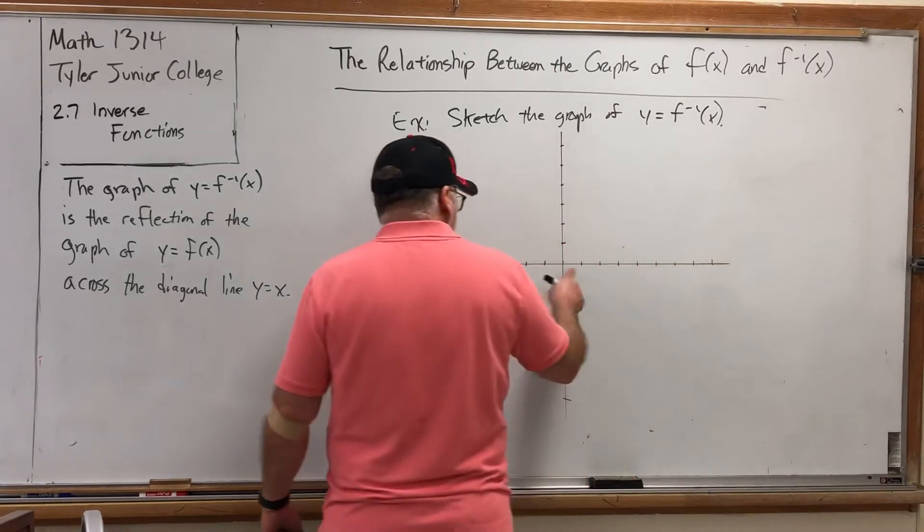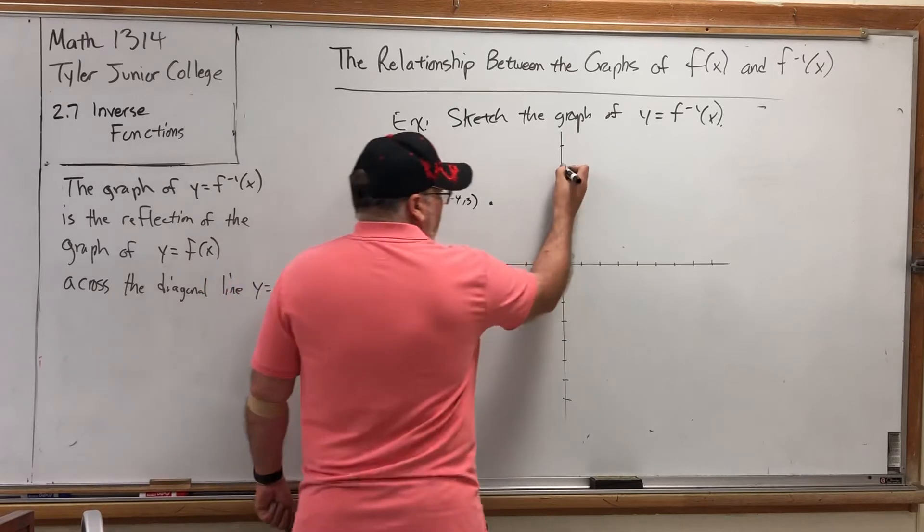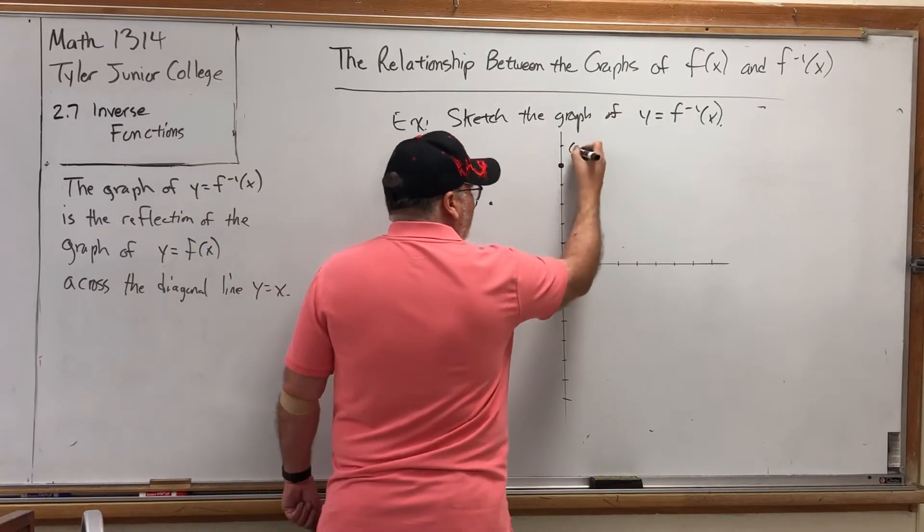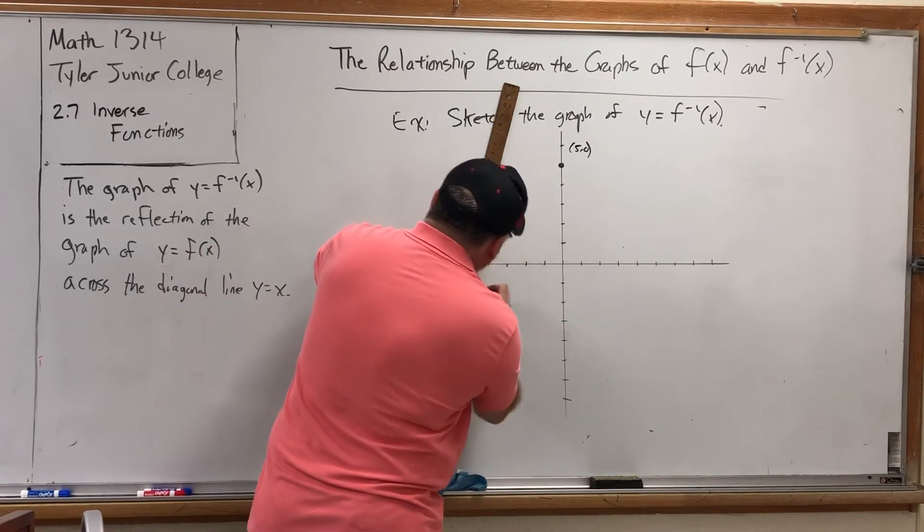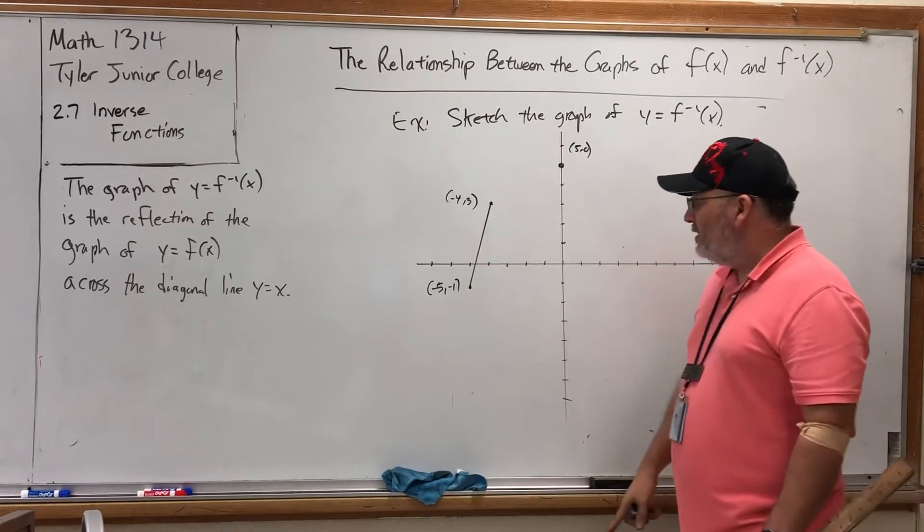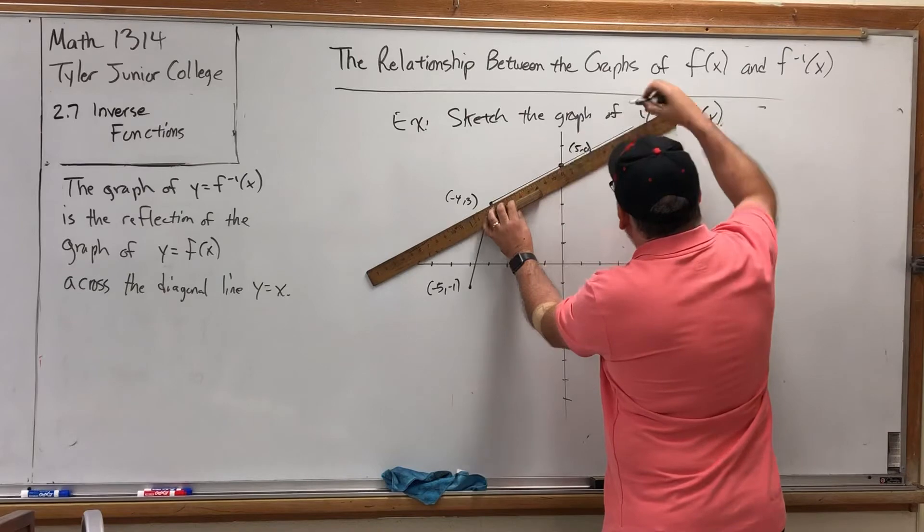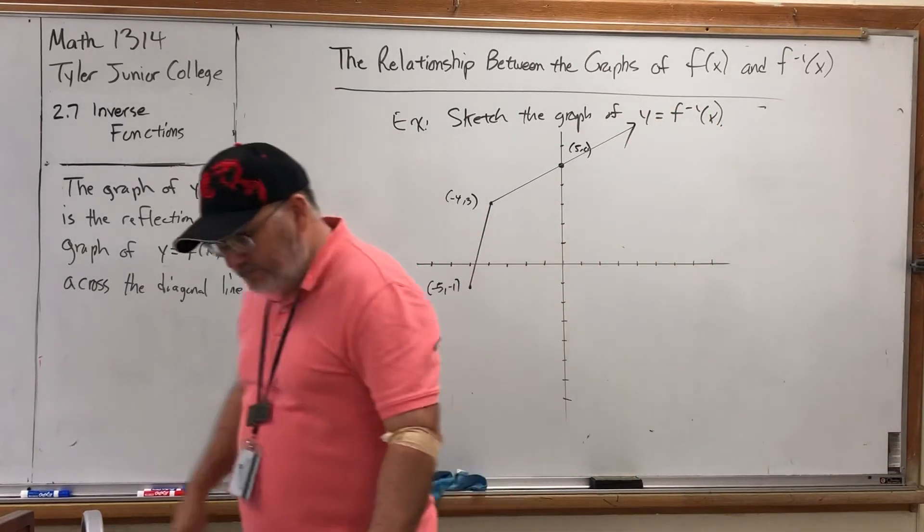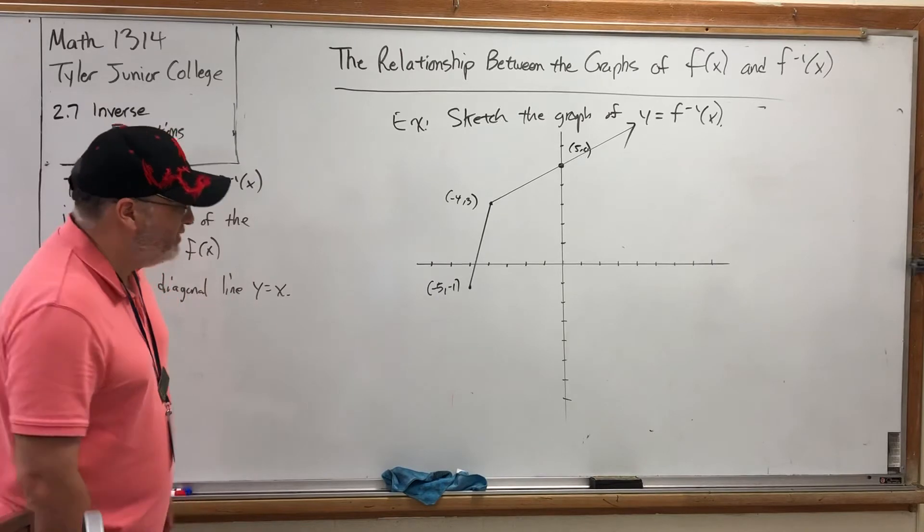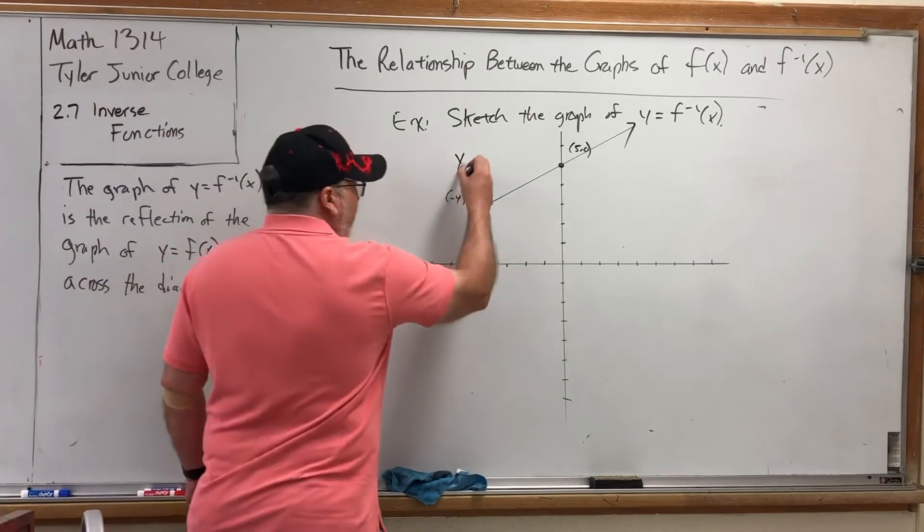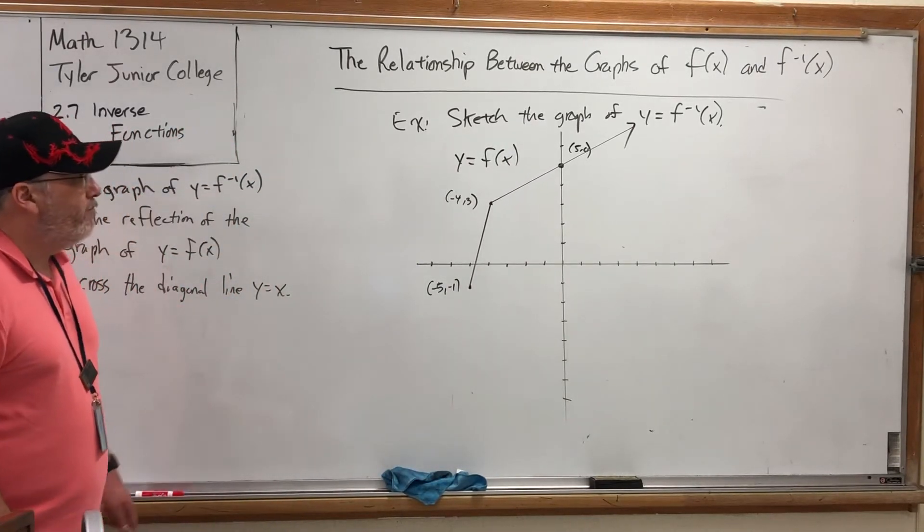We could use 1-inch scales, but then the marks would be pretty close to each other and you guys are way over there. All right, so let's draw the graph of some random function that passes the horizontal line test. Let's go to (-5,-1) and put a dot and label it. Then we're going to go up and connect it to the point (-4,3). And then we're going to send that through an intercept of (5,0), and then the graph will just continue that way forever.